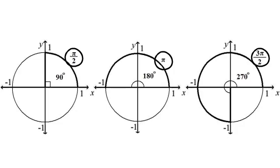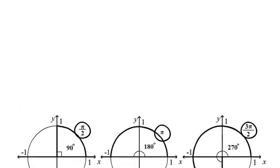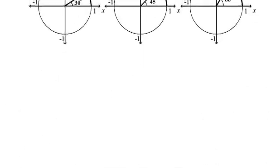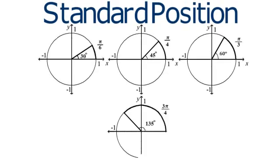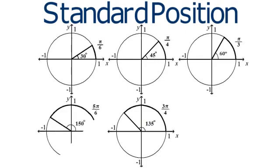Additional angles appear in the second, third, and fourth quadrants. For example, three important second quadrant angles measure 135, 150, and 120 degrees.